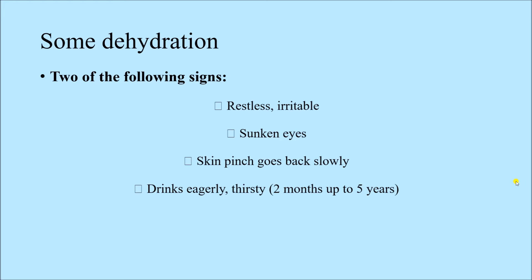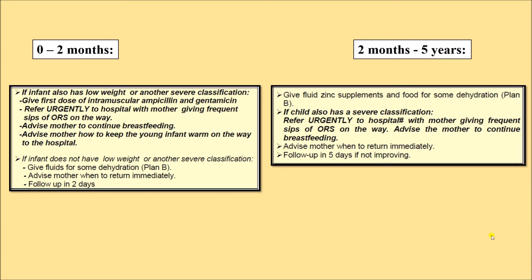For some dehydration, if any two of the following signs are present, it is classified as some dehydration: the child may be restless or irritable, sunken eyes may be present, and the skin pinch goes back slowly — not very slowly. Slowly means it does not go back immediately but does not take as long as 2 seconds. In older children aged 2 months to 5 years, if the child drinks eagerly or is thirsty, it is also considered for this classification. If the child has low weight or severe classification, they are referred to hospital with ORS sips on the way.